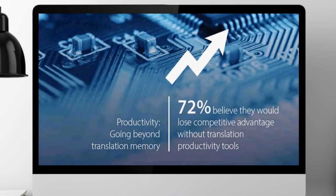Seventy-two percent of people believe they would lose competitive advantage without translation productivity tools. As technology helps us get faster, everybody becomes faster — it's like a domino effect, and to stay competitive, tools are very important. The mainstay of translation productivity tools for the last two decades has been the translation memory, which has been at the core and at the heart of Trados Studio and most CAT tools for many years. We've made some advancements recently in our translation memory technology to help people get more out of the data they already have.